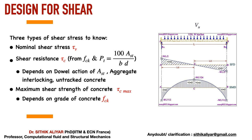For a fixed beam with UDL, the shear force is distributed across the length of the beam, with maximum shear at the supports and the bending moment diagram shown below. Whether fixed or simply supported does not change the shear force diagram — fixing only adds extra moment. Therefore, we need maximum stirrups near the supports and very few stirrups at the center, then again maximum stirrups at the other end.